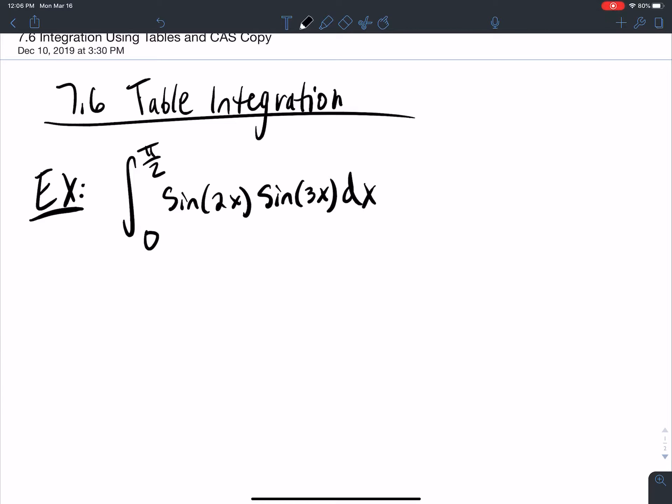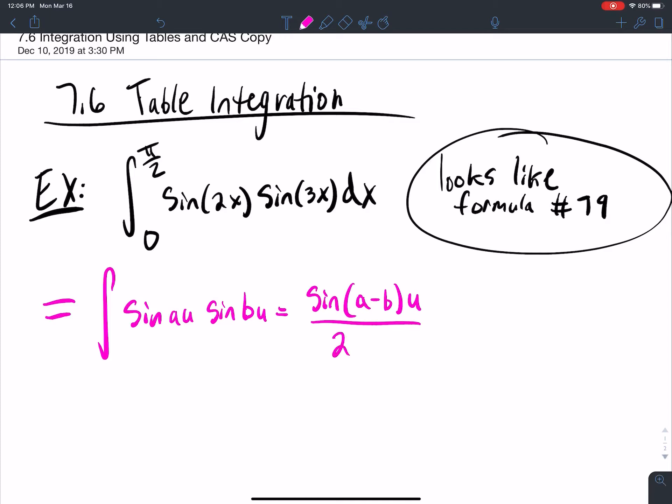This one actually ends up looking like formula number 79. So that would be the hard part, going and finding the formula, but it's not going to be too terribly hard. Formula 79 looks like this: integral sine of AU sine of BU equals sine of A minus BU over two A plus B.